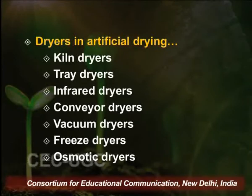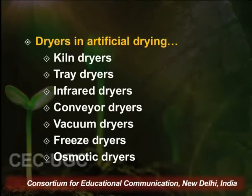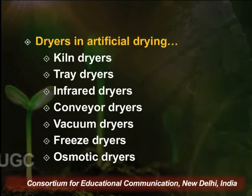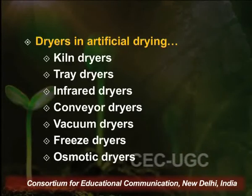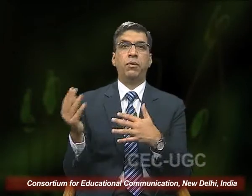Conveyor dryers are also widely used by industry — tray and conveyor dryers are the two most widely used types. In conveyor dryers, the plant material is spread in a very thin layer on a moving conveyor belt and exposed to hot air flowing from the top. You can control the flow and temperature of the hot air as well as the speed of the conveyor belt, making the drying process more effective. Since most variables are controllable, these two dryers are very popular in industry.